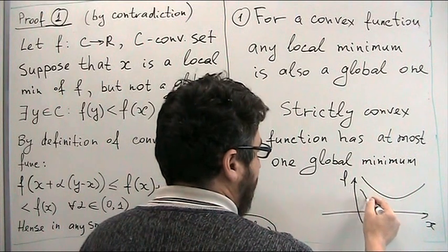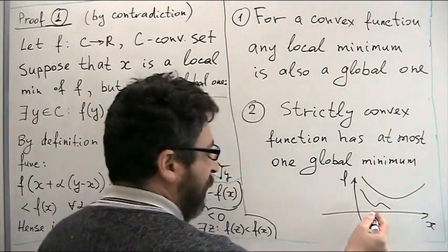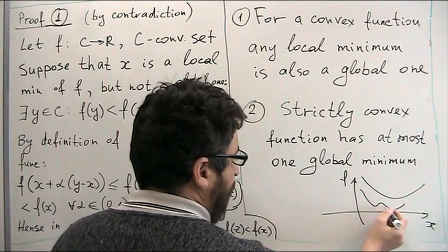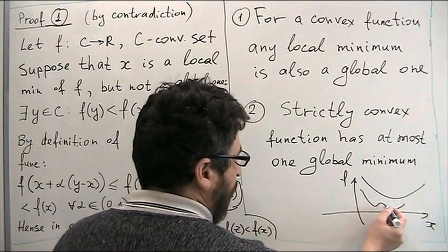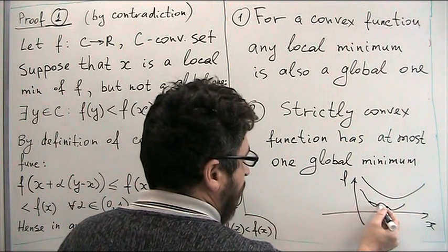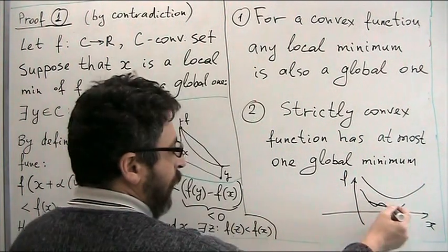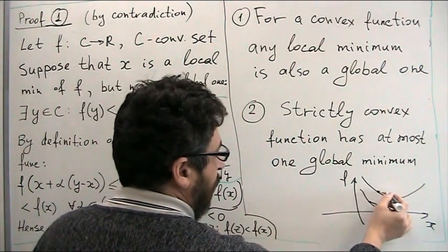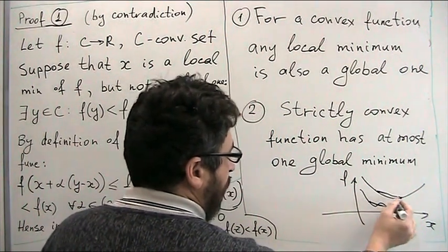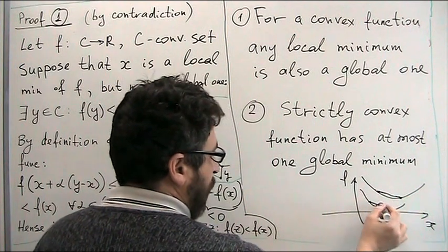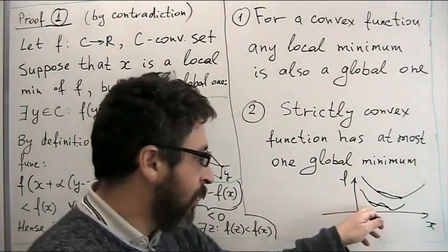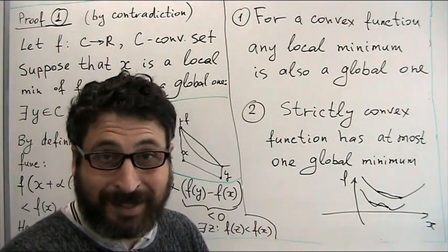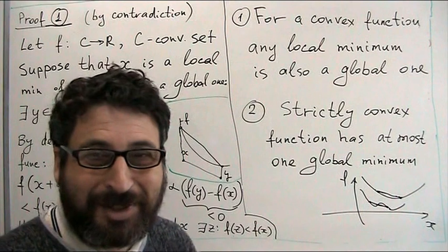A convex function cannot look like this — this function is not convex. By definition, if I take any two points, the line connecting them should be above the function plot. The situation of multiple local minima is not possible for a convex function.